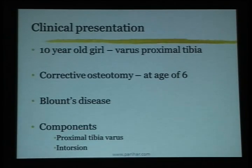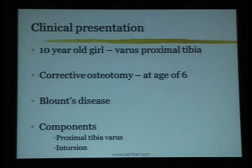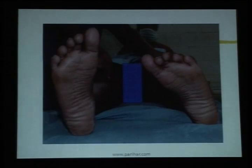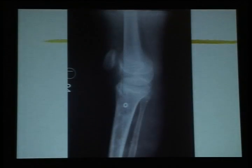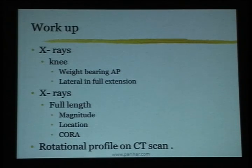I will show a patient to illustrate the use of a hexapod. This was a girl who had Blount's disease treated by corrective osteotomy at age six. She had predominantly proximal tibial varus, a certain amount of internal torsion, and mild hyperextension. Rotation can only be determined clinically or on CT scan — not on plain x-rays. She had about 20 degrees of internal rotation. On the AP x-ray, you can see the normal right side and abnormal left side.